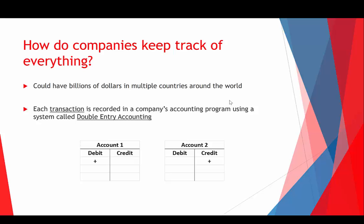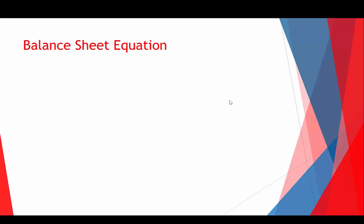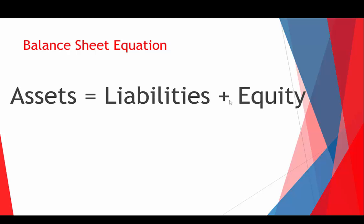Debits always have to equal credits — no exceptions. Debits are always on the left, credits are always on the right — always, no exceptions. So let's look at the balance sheet equation: assets equals liabilities plus equity, which we talked about in video one.